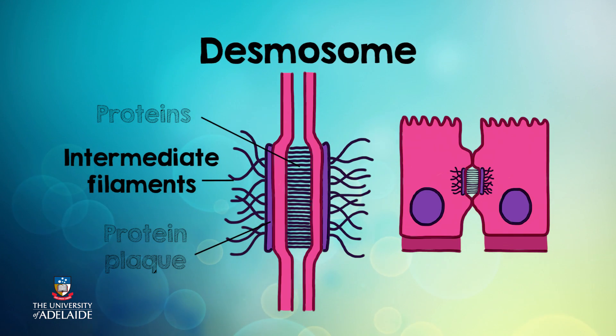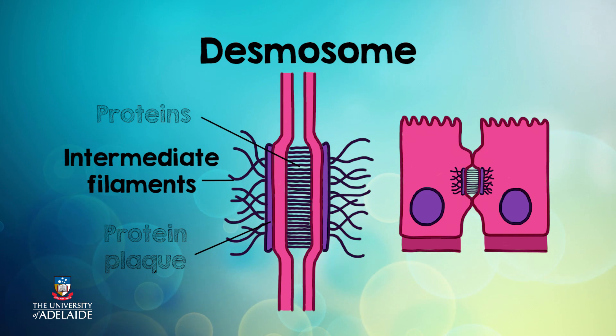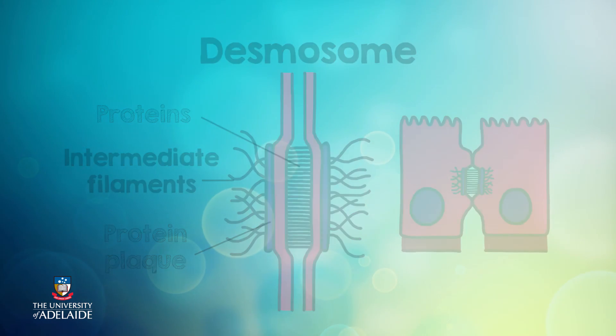Desmosomes are found between epithelial cells that need to withstand physical stress, such as the skin. So if I scratch or rub my skin, it's the desmosomes that are holding these adjacent cells together that prevent them from falling apart.